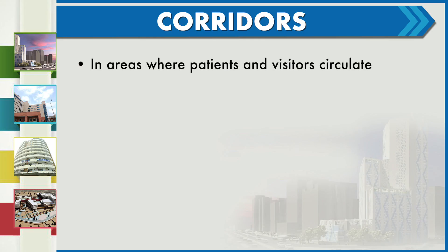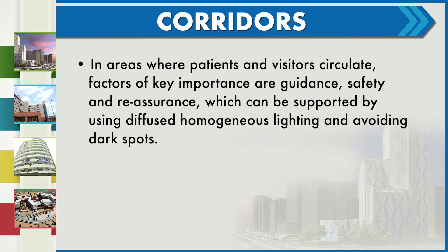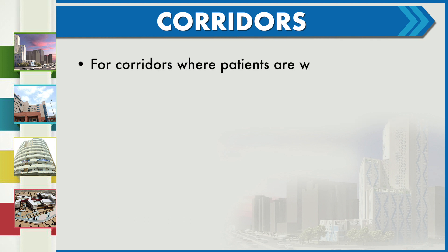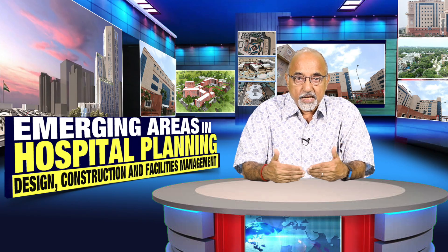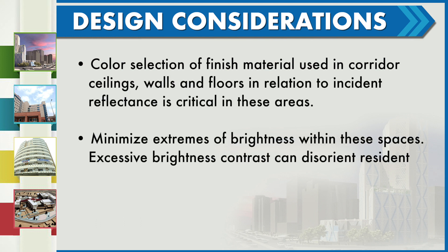Corridors. In areas where patients and visitors circulate, factors of key importance are guidance, safety and reassurance, which can be supported by using diffused, homogeneous lighting and avoiding dark spots. For corridors where patients are wheeled along on trolleys, it must be taken into consideration that sharp contrast can be extremely uncomfortable when patients are looking upwards towards the ceiling while travelling on trolleys. Design considerations: color selection of finished materials used in corridors, ceilings, walls and floors in relation to incident reflections is critical.